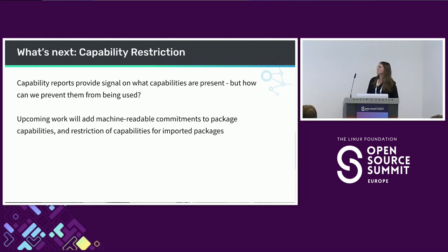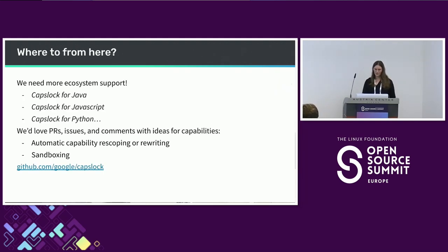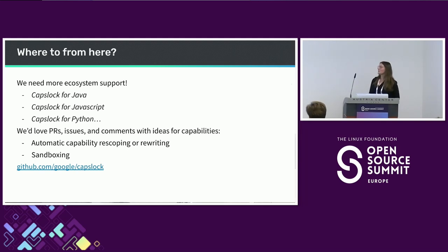For future steps we're looking towards in Caps Lock: we're hoping to add the ability to have an attestation of what capabilities should be present in your library, so that if that's ever violated, you've got a record of what capabilities are present. Potentially we could even say your package shouldn't build if you've got a capability you don't want. We're also looking into statically rewriting call paths that introduce unwanted capabilities so they can never be executed. And we're looking forward to introducing this to additional languages — Caps Lock for Java, Caps Lock for Rust. If these are things you care about, please reach out to us.